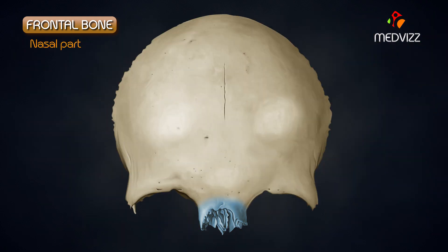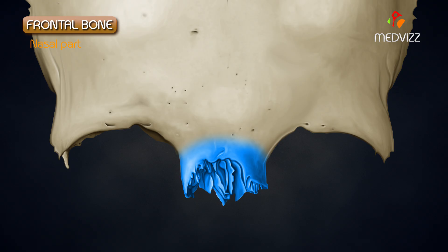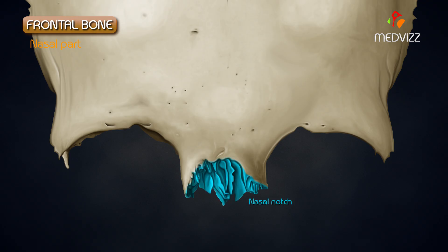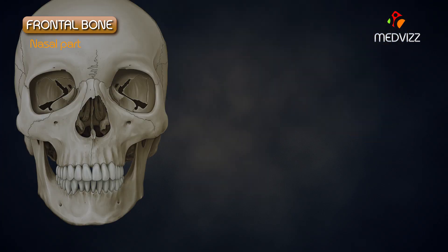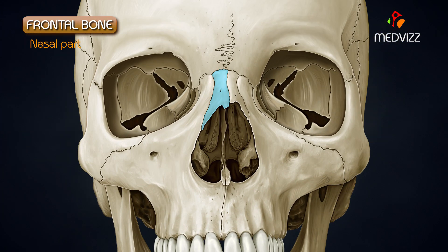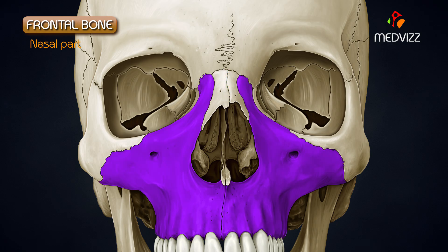Nasal part. This is the portion of bone which projects downwards between the right and left supraorbital margins. It presents a nasal notch, which articulates inferiorly with the two nasal bones, one on each side of the median plane, and laterally on each side with the frontal process of the maxilla and lacrimal bone.